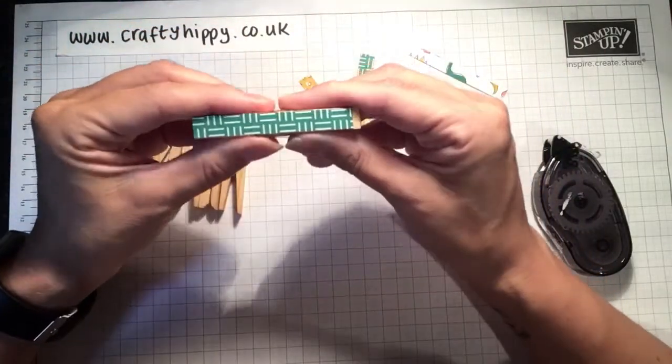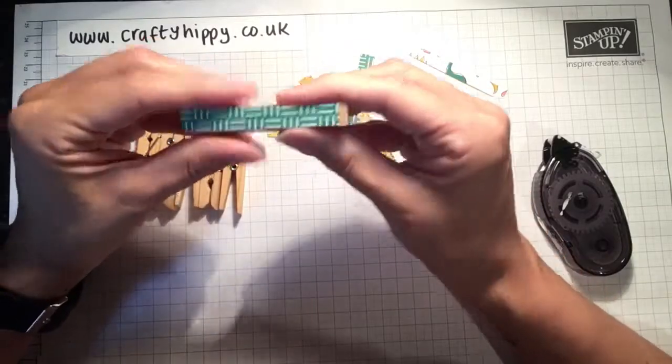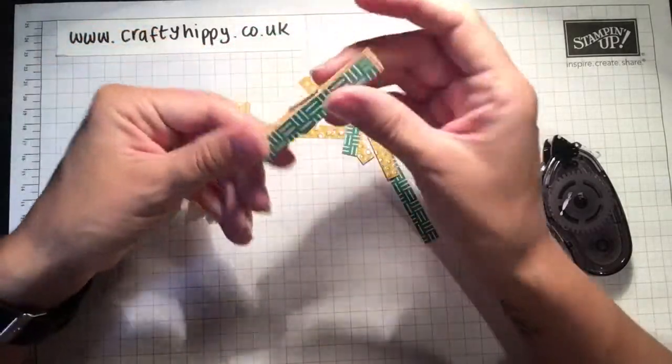You could use a craft lacquer. You could use our fine tip glue pen. It would just give your peg a nice finish.